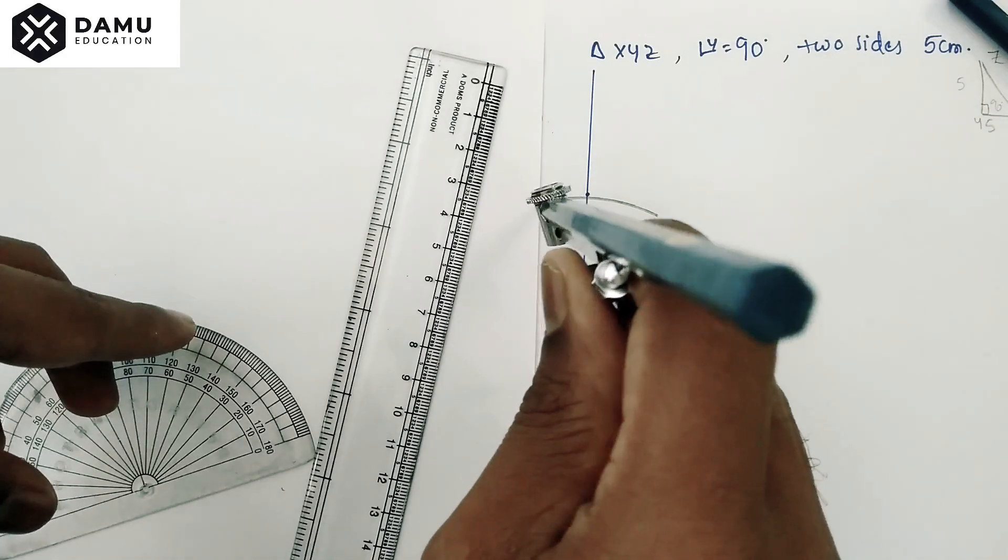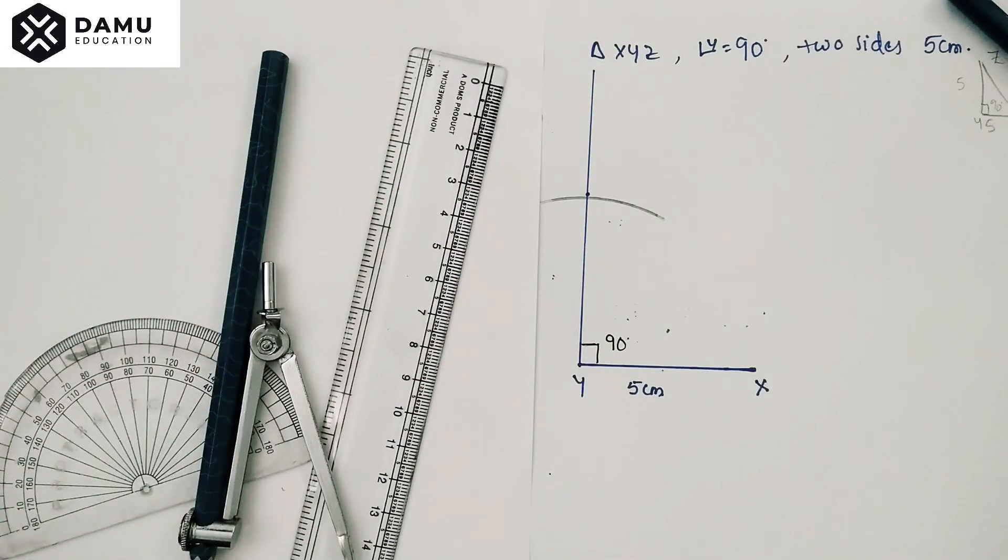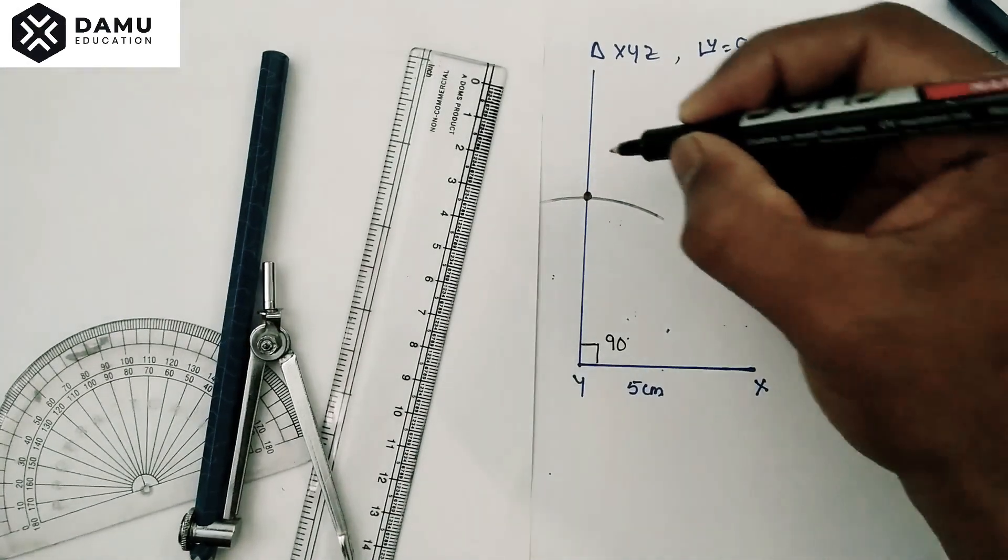With 5 centimeter radius. The arc coincides at 5 centimeters. This point is Z.